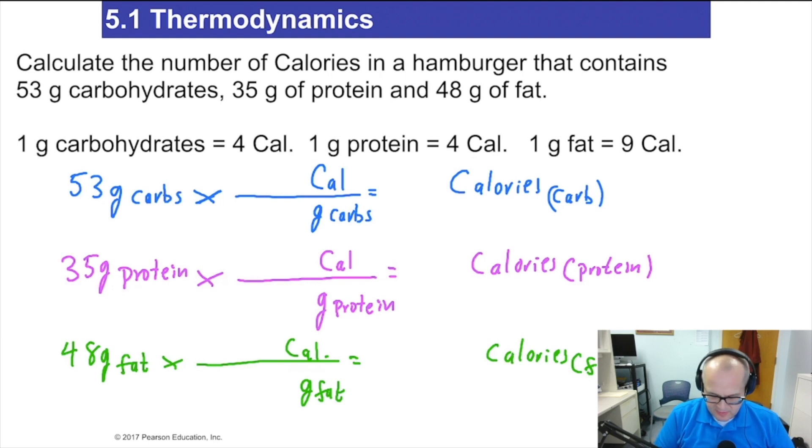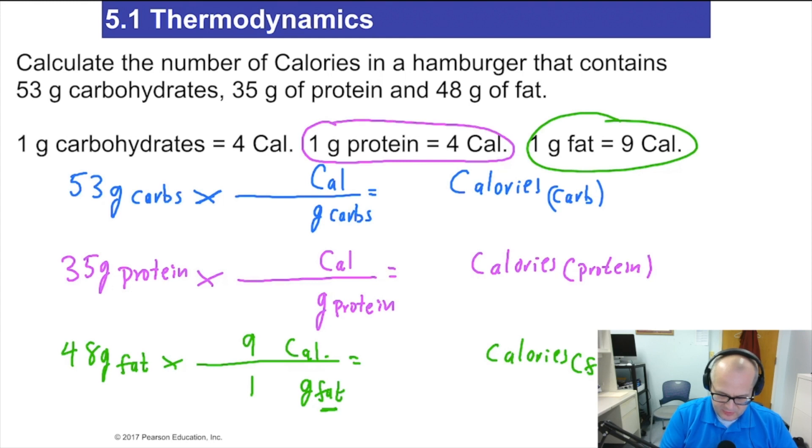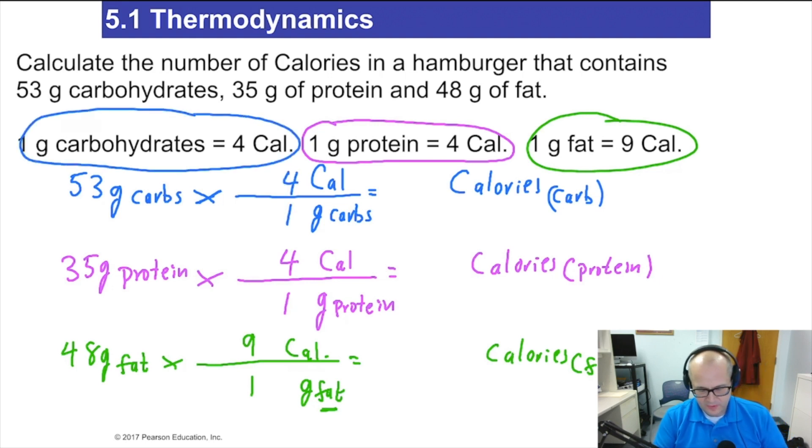Now let's plug in some numbers here. So we're working with the fat right here, the green marker. So that's nine calories per gram. I got that from here. Let's go to the protein. Protein is right here. One gram of protein is four capital C calories. Four and one. And then here, here's our carbohydrate data. Again, that's four and one.